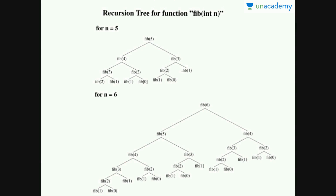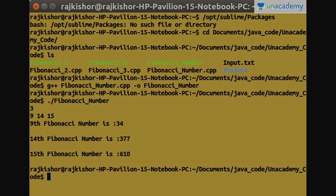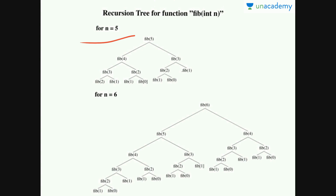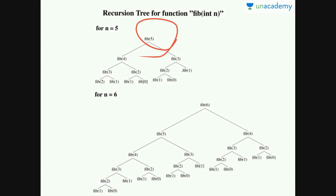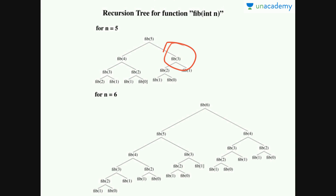Let's try to draw the recursion tree of Fib(5). Since n greater than 0 and 1 here, Fib(5) will break into two parts: Fib(4) and Fib(3). Similarly Fib(4) will break into Fib(3) and Fib(2). Similarly Fib(3) will break into Fib(2) and Fib(1). This Fib(2) will also break into two parts, and Fib(3) also will break into Fib(2) and Fib(1).